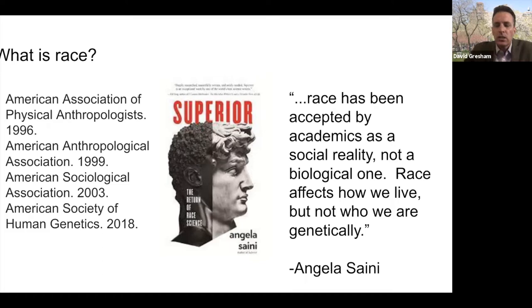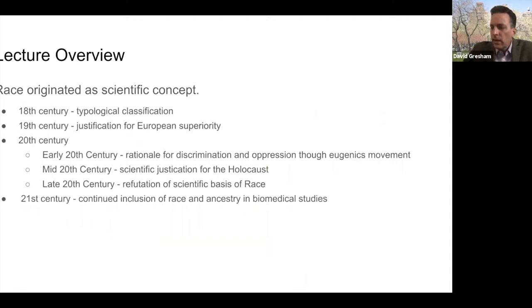What I want to do in this lecture is convey that this concept of race originated as a scientific concept. It came about in the 18th century and was introduced as a typological classification. I want to take you through the history of race as a scientific concept and its use in the 19th century for the justification of European superiority, and then through the 20th century — in which at the beginning of the century it was used as the rationale for discrimination and oppression through the eugenics movement, culminating in the mid-20th century as providing a scientific justification for the Holocaust. Then in the late 20th century there was a refutation of the scientific basis of race, and I'll take you into the 21st century to discuss how race and ancestry remain included in biomedical studies.